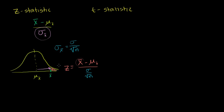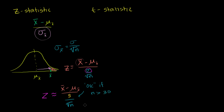Normally we also do not know what the standard deviation of the population is. So to approximate that, we say the z-statistic is approximately our sample mean minus the mean of the sampling distribution, divided by our sample standard deviation over the square root of our sample size. This approximation is OK if our sample size is greater than 30 — this will be approximately normally distributed even with the approximation.